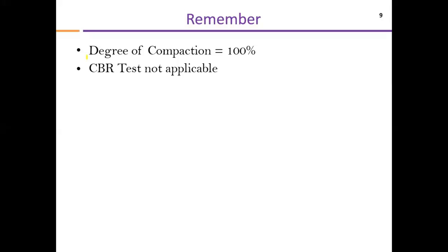The site inspector then calls the laboratory staff, who perform a field density test on site to find the gamma-d field value. Using this value along with the maximum density achieved in the lab from the modified Proctor compaction test, the degree of compaction is calculated. This degree of compaction should be equal to or greater than 100% in order to pass the layer. It should also be kept in mind that the CBR test is not applicable on water-bound macadam, because the plunger of the CBR machine cannot penetrate into the crushed stones.